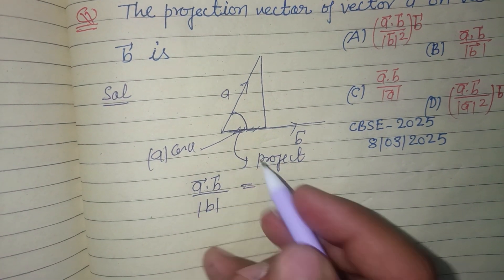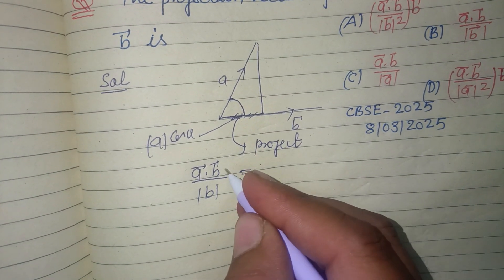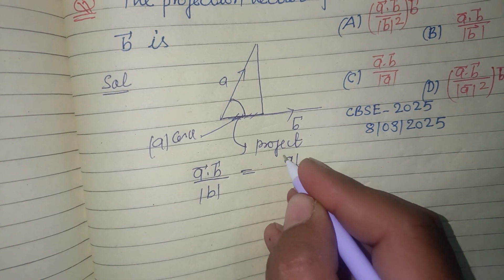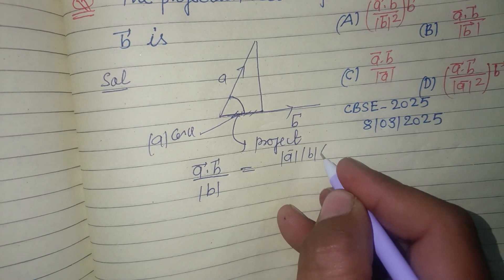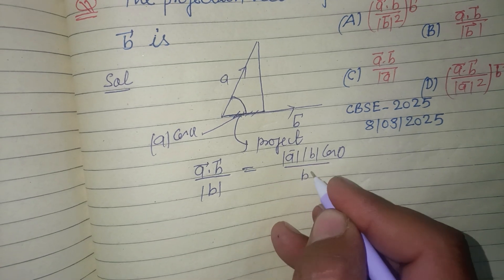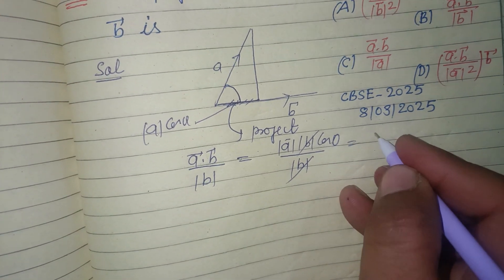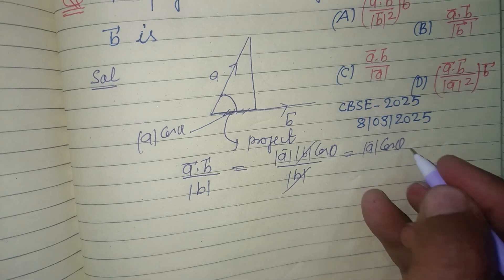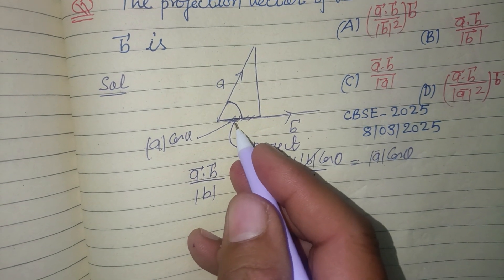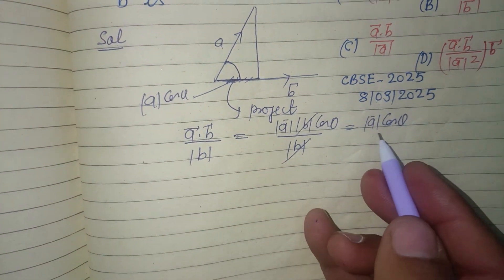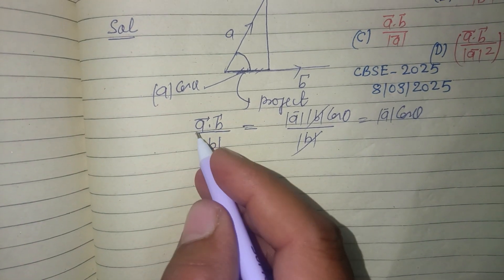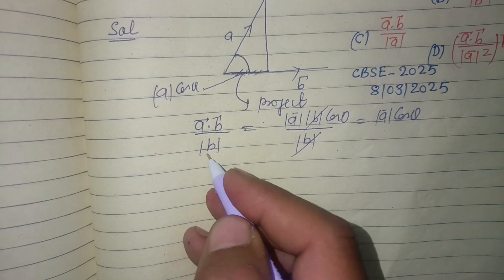We can find a dot b as you know that mode a mode b cos theta upon mode b. So mode b, mode b cancel, we got mode a cos theta. So this part is projection which is mode a cos theta, and it can be written in form of a dot b over mode of b.